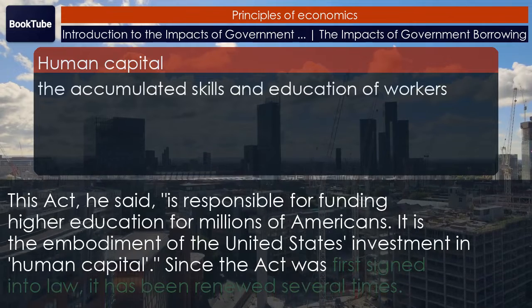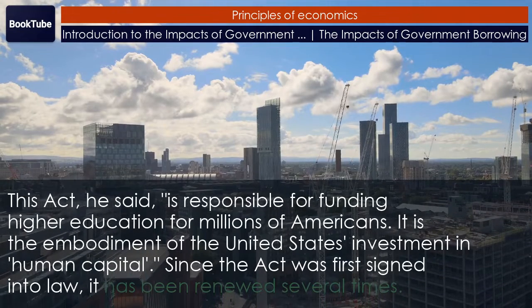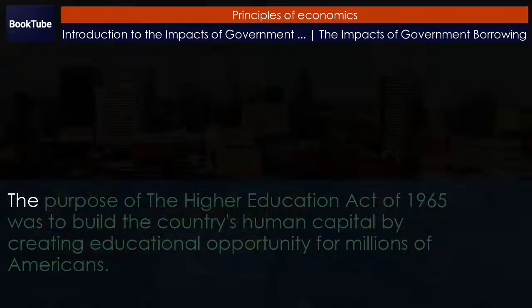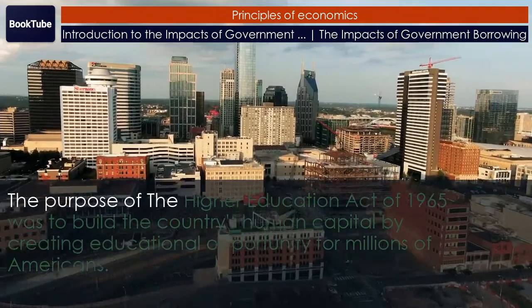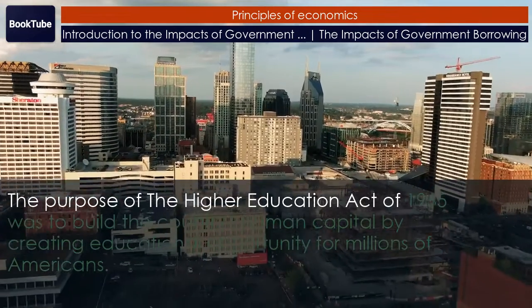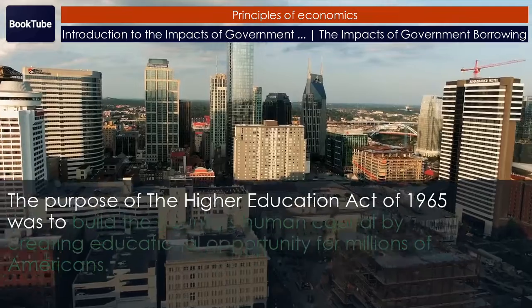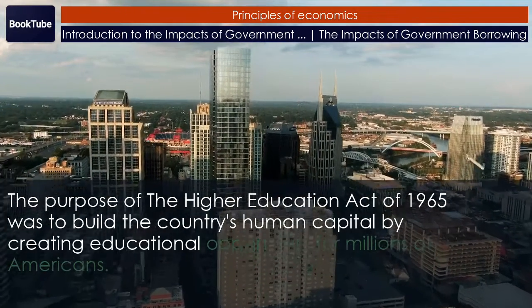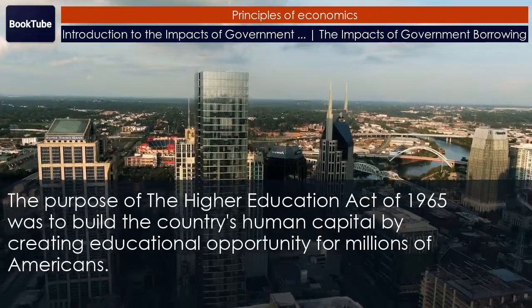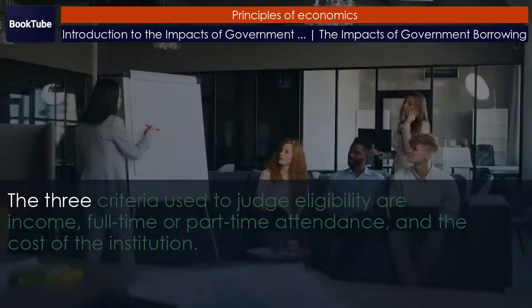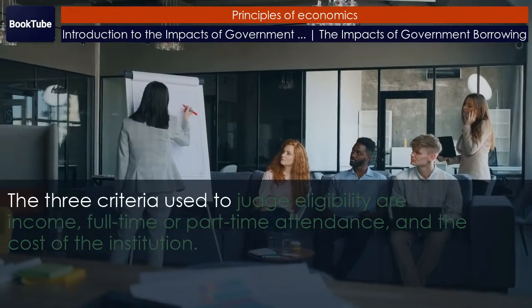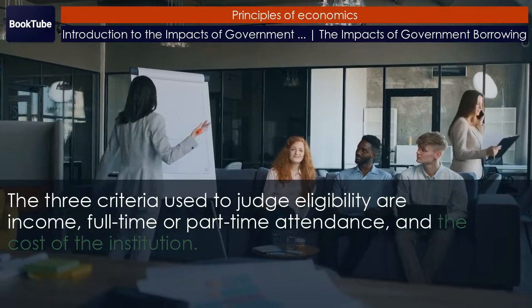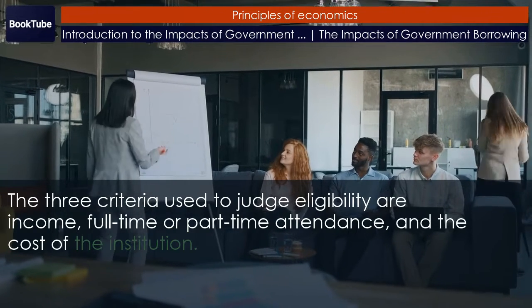Since the act was first signed into law, it has been renewed several times. The purpose of the Higher Education Act of 1965 was to build the country's human capital by creating educational opportunity for millions of Americans. The three criteria used to judge eligibility are income, full-time or part-time attendance, and the cost of the institution.